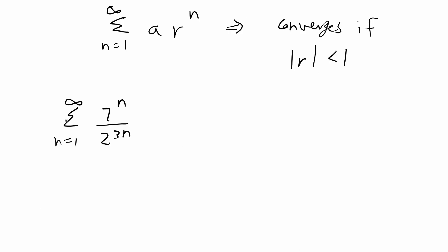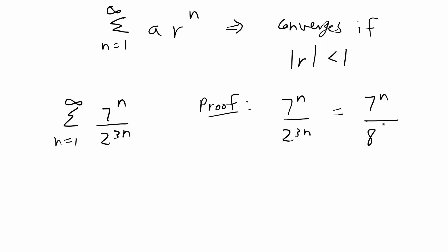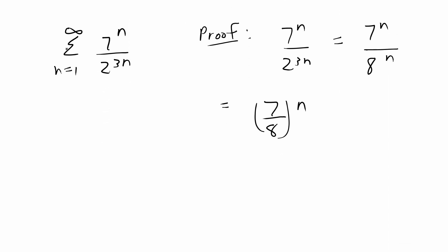So if we go back to our problem, our original series is finding the infinite sum from n equal to 1 to infinity of 7 to the n over 2 to the 3n. We can rewrite this and prove its convergence as follows. We can rewrite 7 to the n over 2 to the 3n — since 2 to the 3 equals 8 — as 7 to the n over 8 to the n, which simplifies to 7 over 8 to the n. So we can rewrite our original geometric infinite sum as the sum from n equal to 1 to infinity of 7 over 8 to the n.